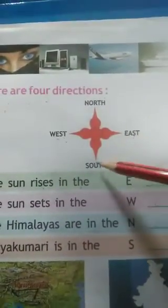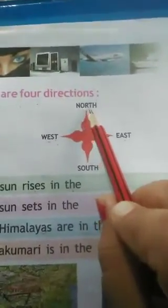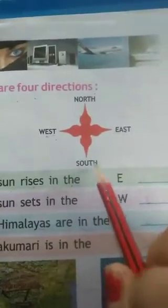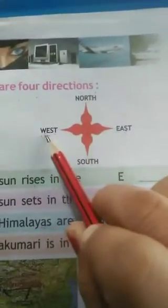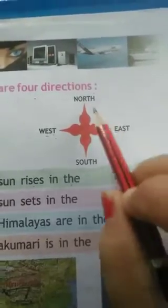The four directions are North, South, West, and East. North: N-O-R-T-H. South: S-O-U-T-H. West: W-E-S-T. East: E-A-S-T. These are the four directions.